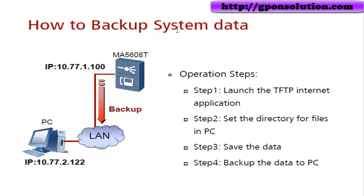How to backup system data: suppose the OLT IP is 10.77.1.100 and this is your local LAN PC client. Operation steps — step one: launch the TFTP application and set the directory for the file in the PC to save the backup data.